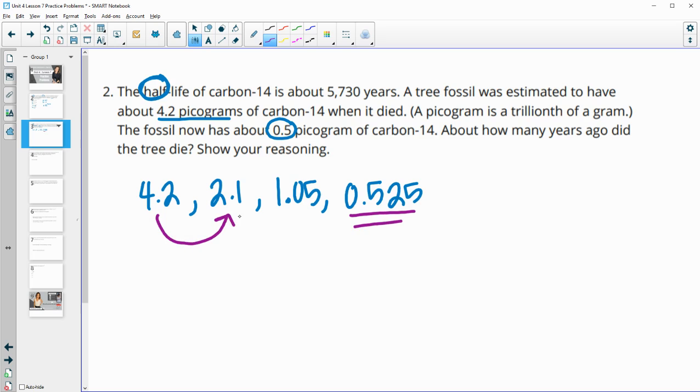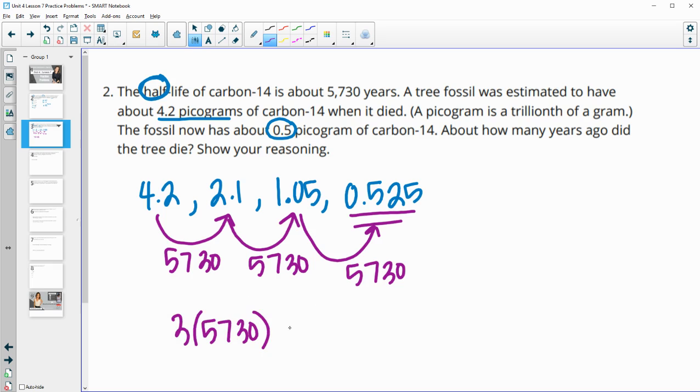Remember that these factors of a half happen every 5,730 years. After 5,730 years it was 2.1, then after another 5,730 years it was 1.05, and then after another 5,730 years it was about 0.5. This is three half-lives later. You can either add that together three times or think three half-lives times 5,730. This substance has 0.5 picograms of carbon after 17,190 years, so that's how long ago it died.